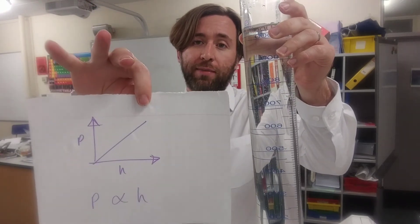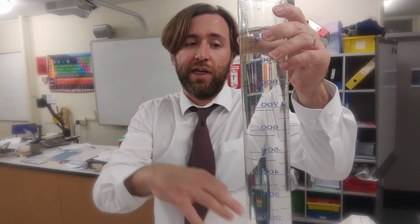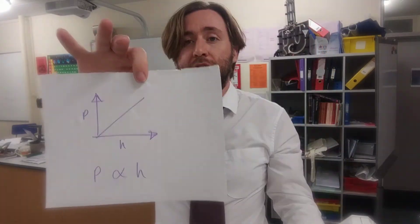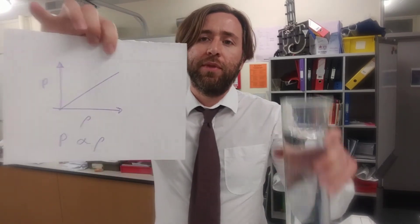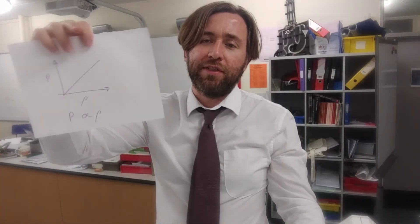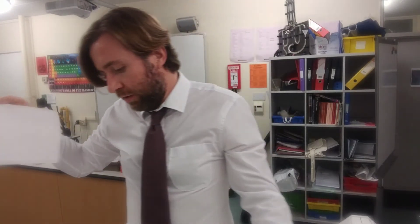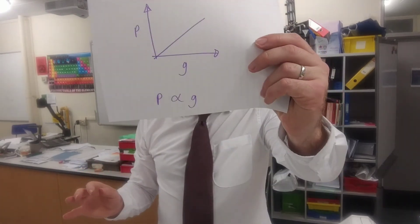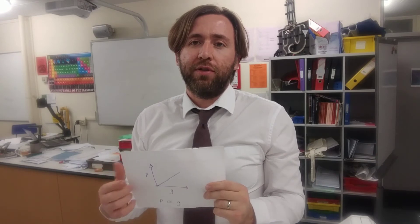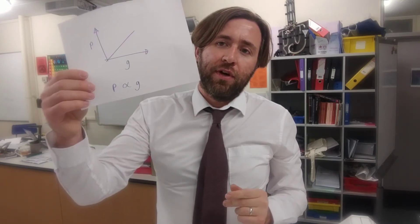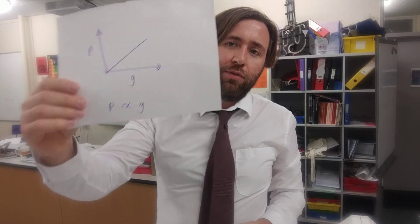I could do that as an experiment with more depth in my column of liquid and I'd get this relationship: pressure is proportional to depth, so the deeper I go the more pressure I get — double the depth, double the pressure. I could also find liquids of known density and show that pressure is proportional to density: double the density of the liquid you're submerged in, and you double the pressure.